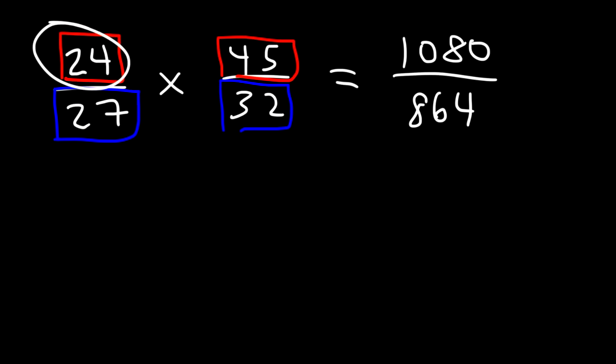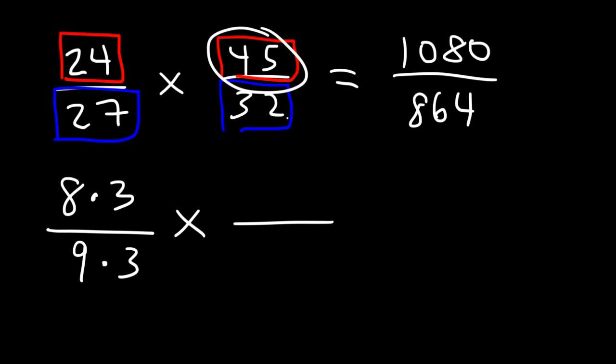And the key is to simplify before you multiply. So for instance 24 we can write that as 8 times 3. 27 we can write it as 9 times 3 because 9 times 3 is 27. Now 45 you want to break it down into a number with a 9, so you can cancel this 9. It turns out that 9 times 5 is 45. And 32 we can represent it as 8 times 4. So you want to break down these large numbers into smaller numbers in such a way that you can cancel some of those smaller numbers.